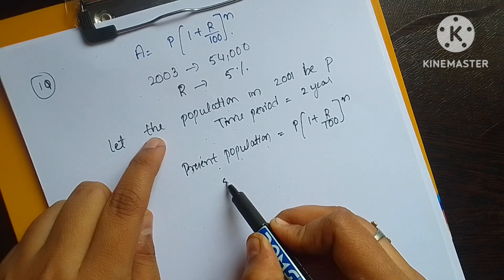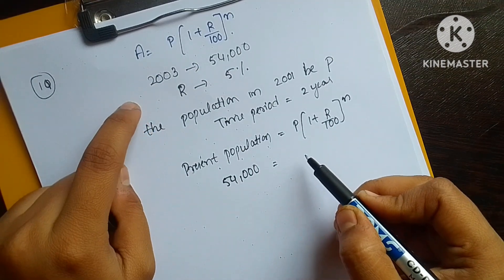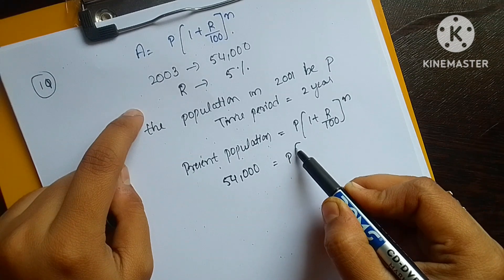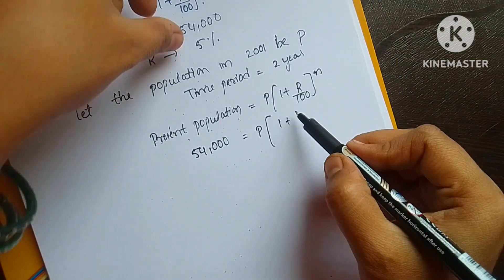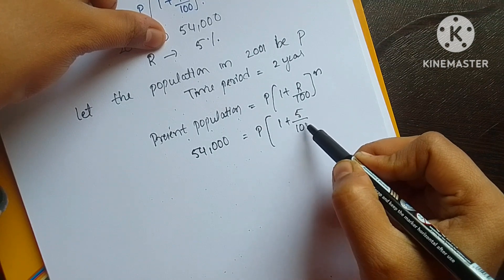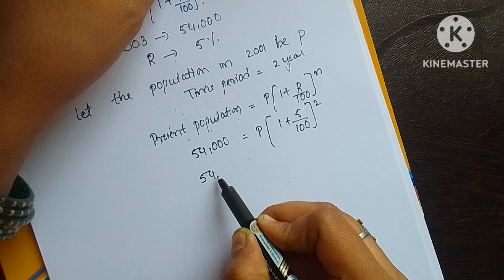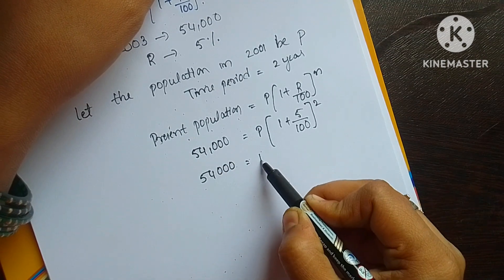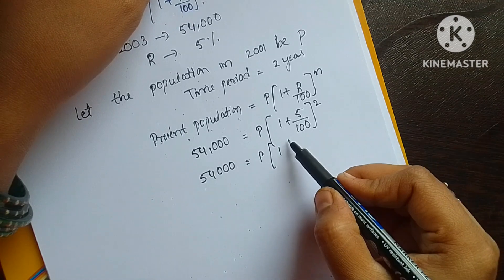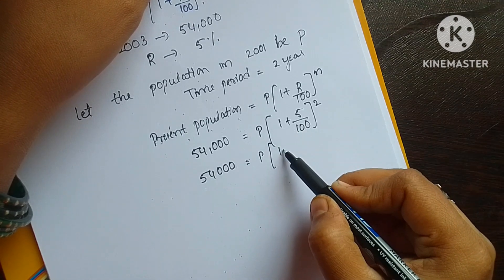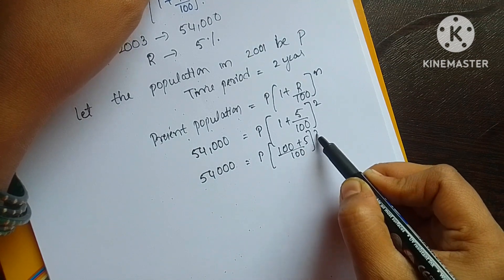The present population is 54,000. P is what we have to calculate. R is 5 by 100 and N is 2. So: 54,000 = P into (100 + 5)/100 whole to the power 2. After cross multiplication: 54,000 = P into (105/100) squared.